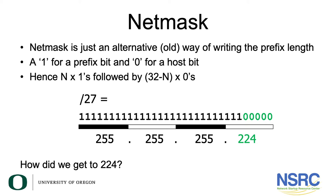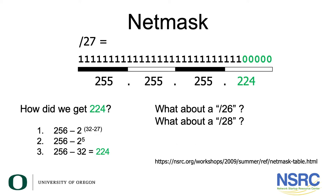How did we get to 224? Remember, a /27 is 27 ones followed by five zeros because an IPv4 address has 32 bits. We get 224 by subtracting 2 to the power of the number of host bits — in this case 32 minus 27 — from 256. This is 256 minus 2 to the power of 5, which is 256 minus 32, which equals 224. An alternative way is converting the last eight bits — 111 followed by five zeros — directly from binary to decimal, which also gives 224.